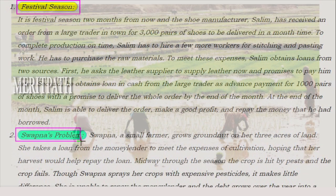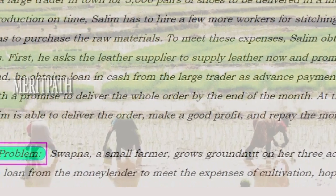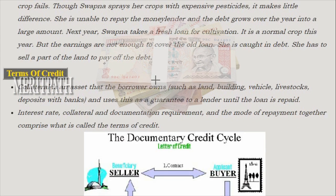Swapna is a small farmer who grows groundnuts on her three acres of land. She takes a loan from a money lender to meet cultivation expenses, hoping the harvest will help repay the loan. Midway through the season, the crop is hit by pests and fails. Though she sprays expensive pesticides, it makes little difference. She cannot repay the money lender and the debt grows. The next year she takes a fresh loan, but earnings are not enough to cover the old debt, and eventually she has to sell part of her land to pay it off — a debt trap.